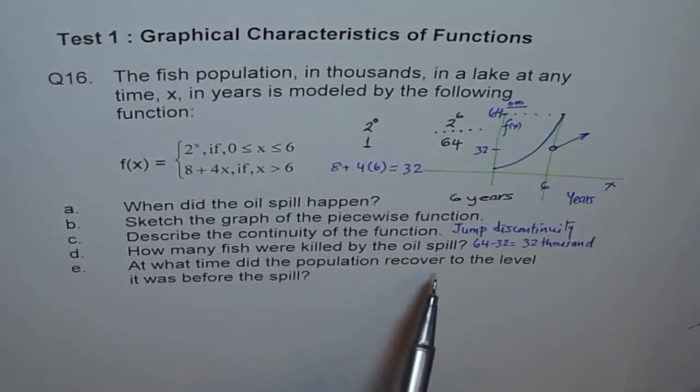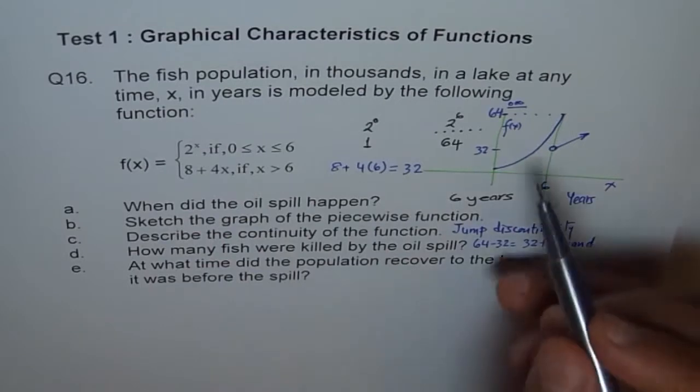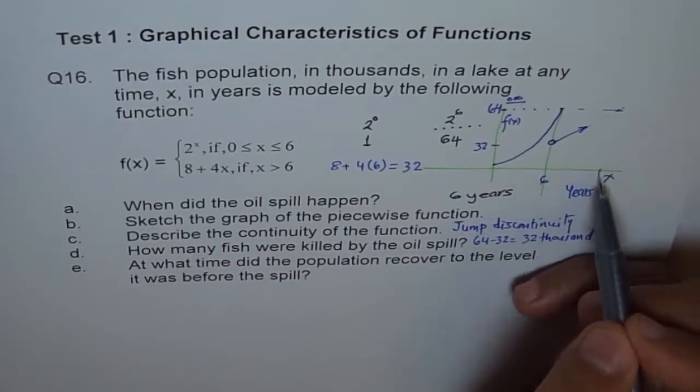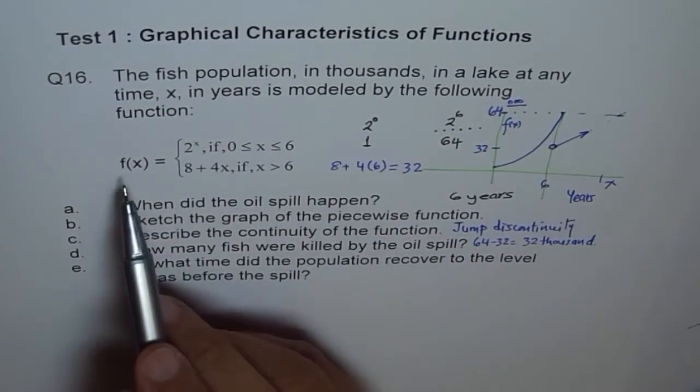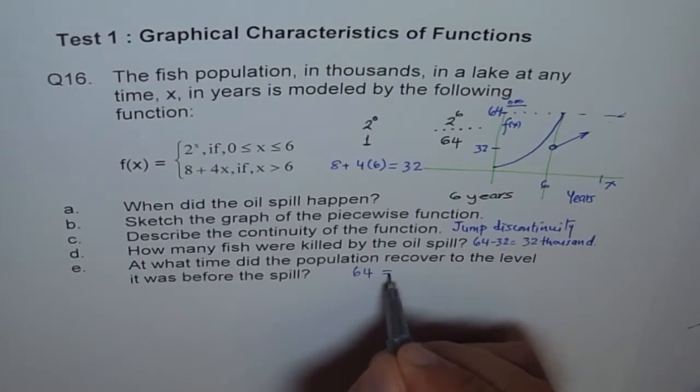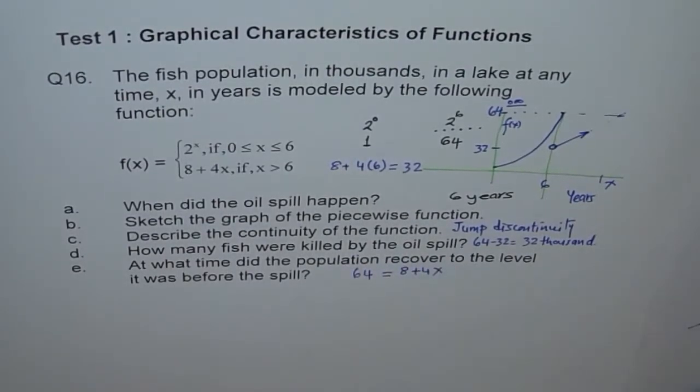At what time did the population recover to the level it was before the spill? After some time, it's increasing, so sometime it will be at this level. The easy way to find is f of x should be 64. So we say 64 equals 8 plus 4x. We have to find what x is.